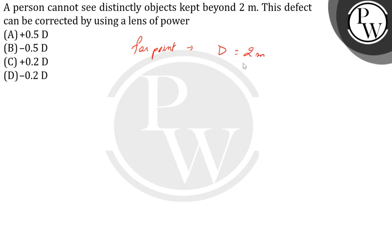Here we can see that it is a case of short-sightedness, so the person is suffering from myopia. We know that when a person suffers from myopia, they have to use a concave lens.